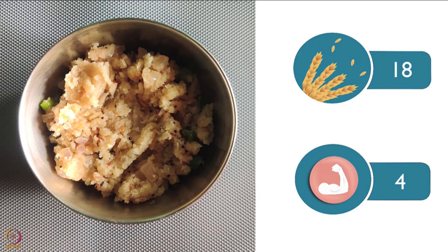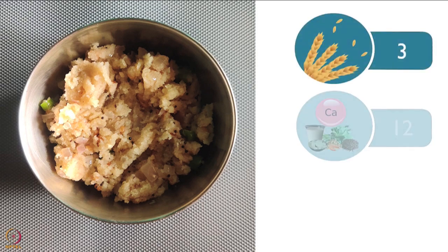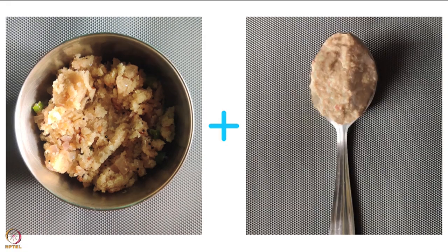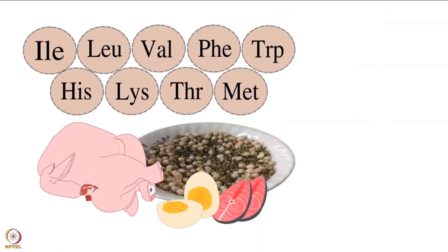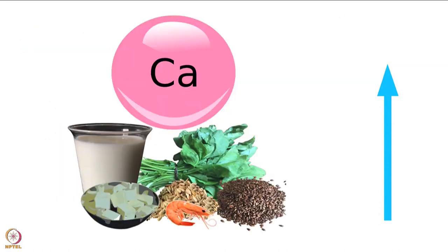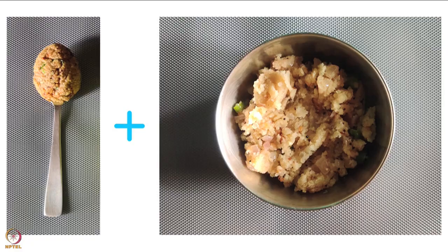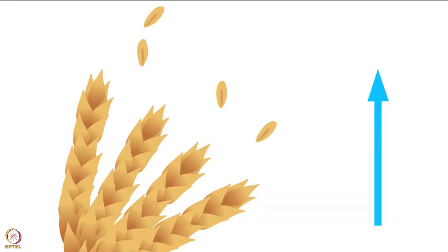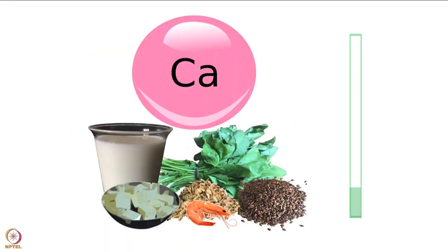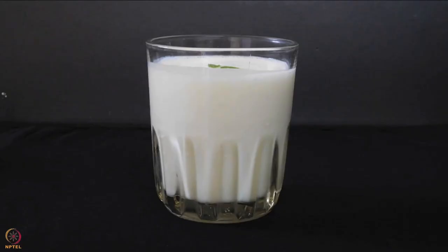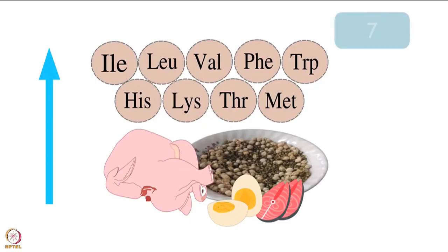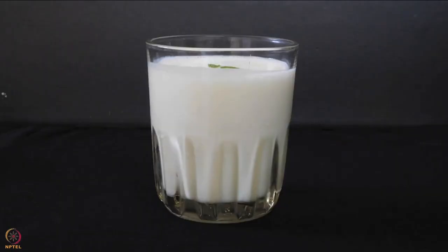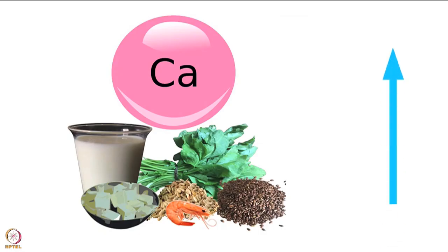Next is the nutrient count of upma. Half bowl of upma has around 18 grams carbohydrates and 4 grams protein. It has 3 grams of fiber, 12 milligrams calcium and 1 milligram iron. On combining with 1 tablespoon coconut curd chutney, fiber increases to 6 grams, protein increases to 7 grams, and calcium increases to 42 milligrams. 1 tablespoon sesame peanut chutney with upma increases the protein to 7 grams, improves fiber to 5 grams, and calcium increases by 90 times. 1 glass of lassi with a pinch of salt — having 50 grams curd — increases the protein to 7 grams and calcium to 131 milligrams.